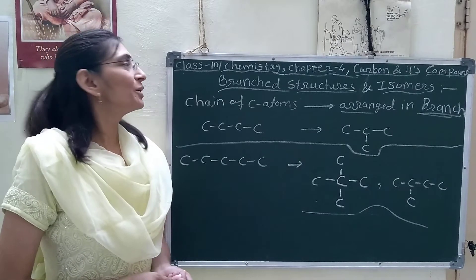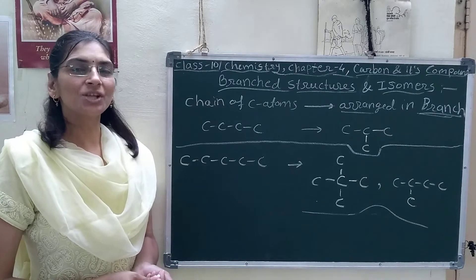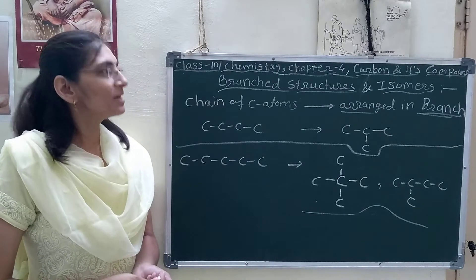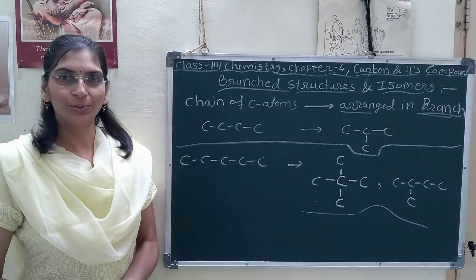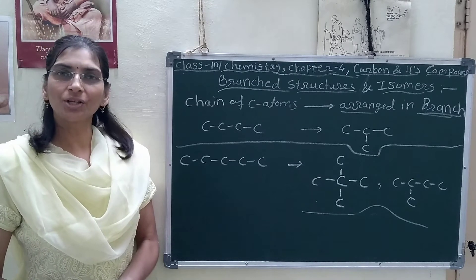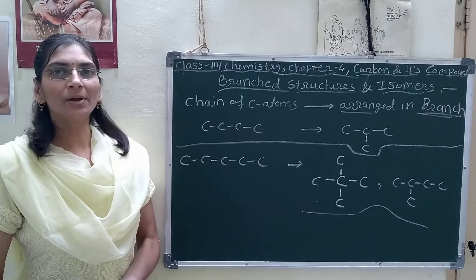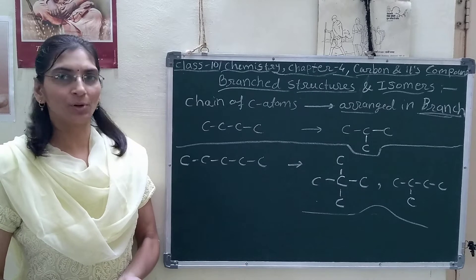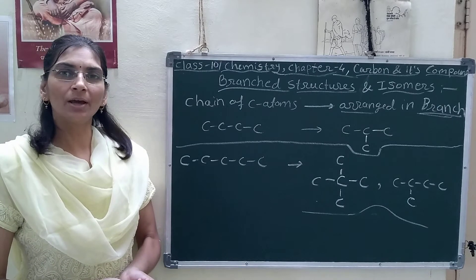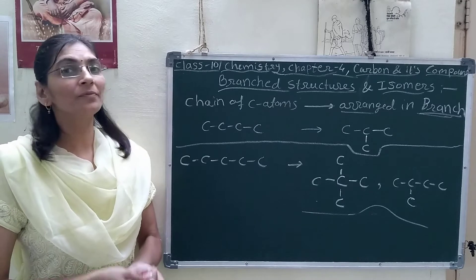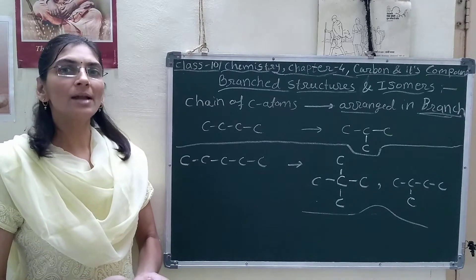Good morning students. Today we will see Class 10 Chemistry Chapter 4: Carbon and its compounds. In our last lecture we have seen alkyl groups and various functional groups attached with the alkyl group. For example, we have seen the structure of chloroalkane, including chloromethane, chloroethane and so on.